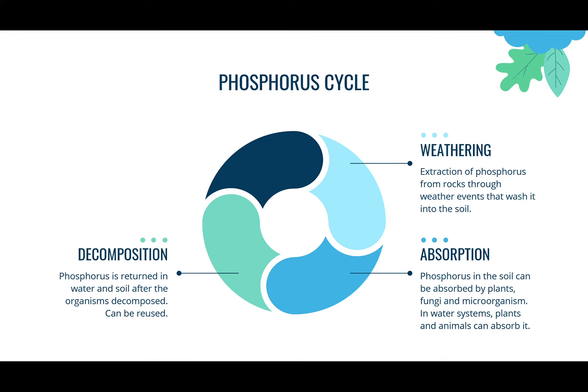The phosphorus cycle has three main stages. First, weathering: the extraction of phosphorus from rocks through weather events that wash it into the soil. Then absorption: phosphorus in the soil is absorbed by plants, fungi, and microorganisms, and then gets into water systems where plants and animals can absorb it. Last, decomposition: phosphorus is returned to the water after organisms decompose, from where it can be reused — that's why it's a cycle.